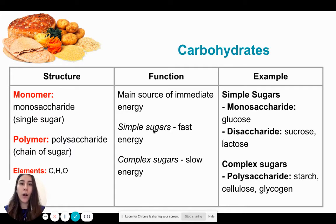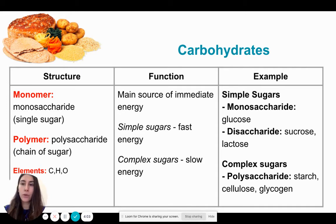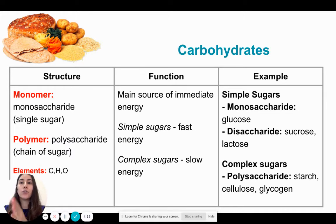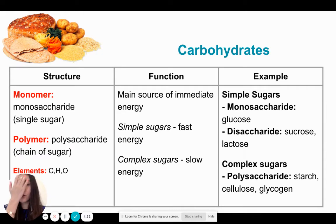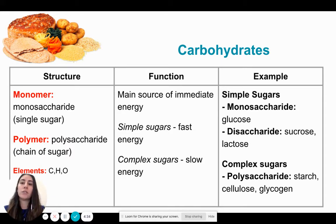The first are carbohydrates, and the monomer of carbohydrates is a monosaccharide. For each carbon-based molecule, you need to be familiar with its structure, its function, and one or two examples. The monomer — the building block, the smallest unit of a carbohydrate — is known as a monosaccharide. The prefix mono means one and saccharide means sugar, so monosaccharide literally translates to one sugar, or a single sugar, which makes sense because this is the smallest part of a carbohydrate.